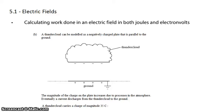David Kahn here with another question in topic 5.1. We're looking at calculating work done in an electric field in both joules and electron volts. In this question we have a thundercloud modeled as a negatively charged plate parallel to the ground.